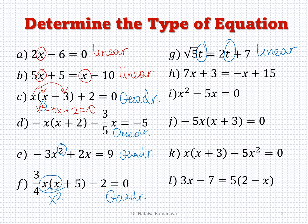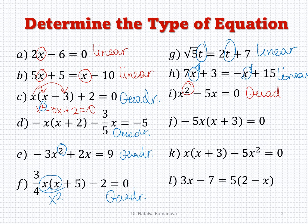Next: we have 7x and negative x, both with power equal to 1, so this is a linear equation. Then x squared minus 5x equals 0 — the highest value of the exponent equals 2, a classic example of a quadratic equation.